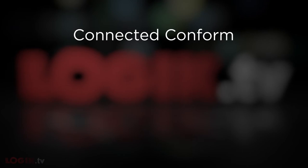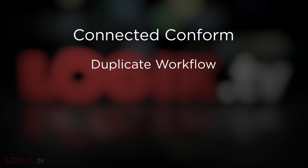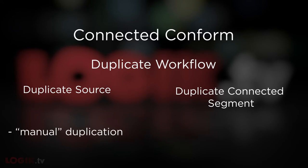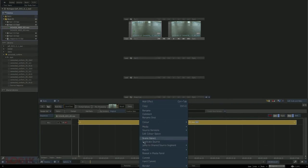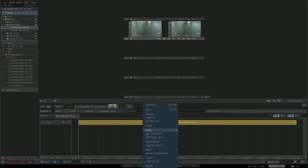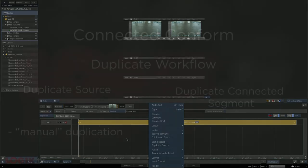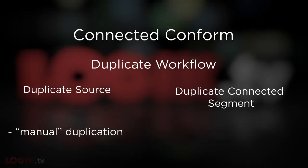The next subject is what I'm calling the duplicate workflow. This is the shot versioning part of the connected conform, and similar to the section on segment connections, it has two pathways: duplicate source and duplicate connected segment. Duplicate source is something of a manual duplication in that it only affects itself. If you take a clip that's used in multiple places and duplicate source, you'll find that the clip you duplicated no longer has any shared sources because its behind-the-scenes clip was duplicated.